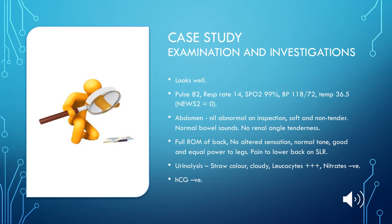There is pain to the lower back on a left straight leg raise. Urinalysis was performed and found to be straw coloured, slightly cloudy, with 3+ leukocytes and negative for nitrites. The pregnancy test was negative.